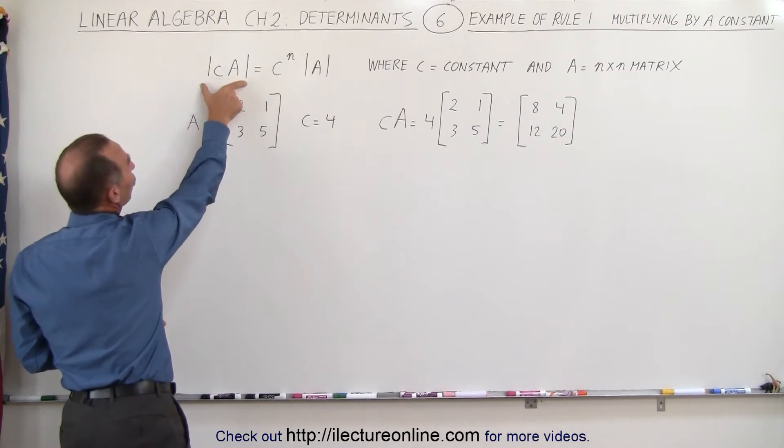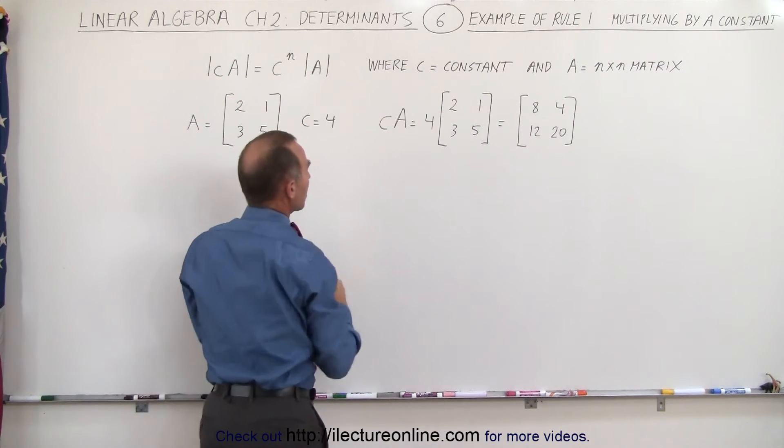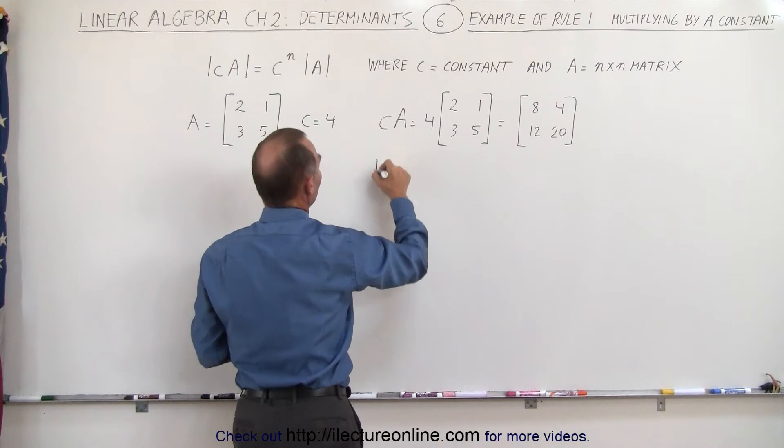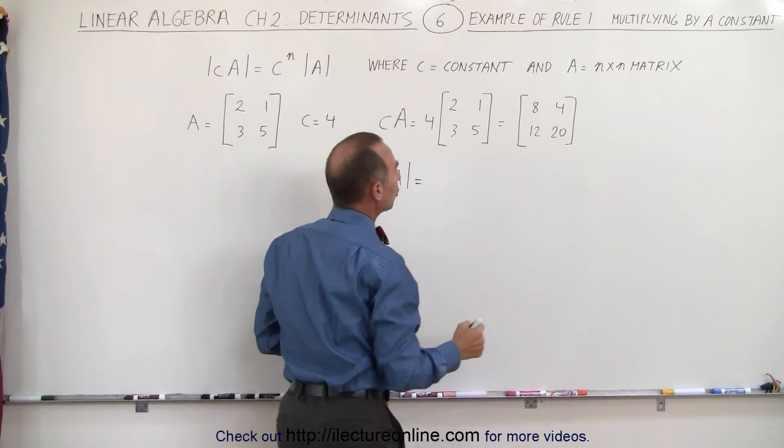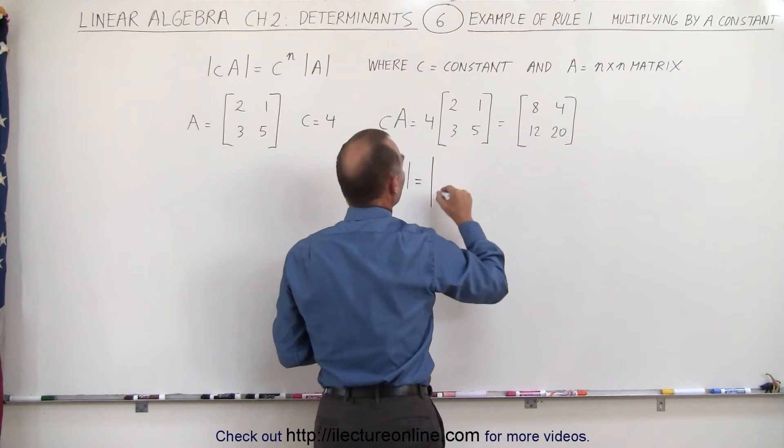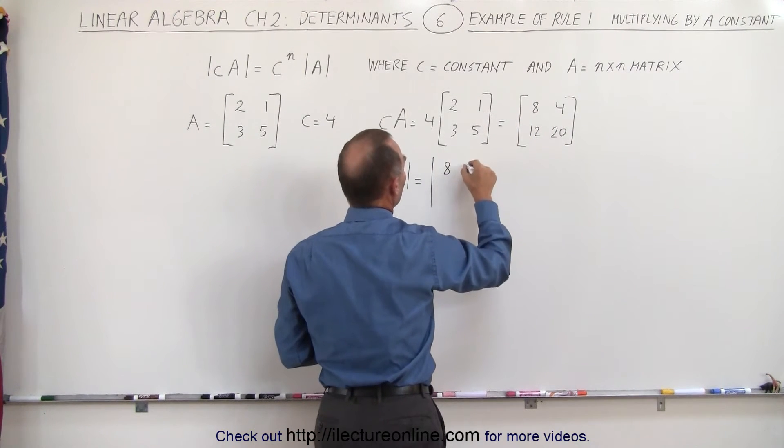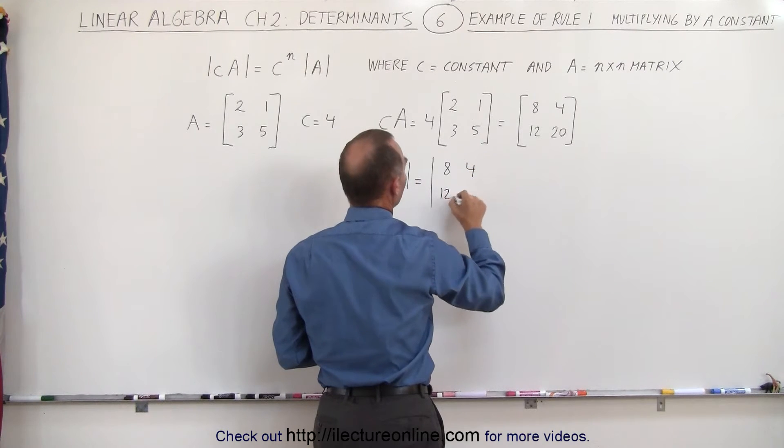Let's now take the determinant of this right here. So the determinant of C times A is written like this. And so that would be equal to, or actually let me just write it out. It makes more sense when I write it out like that. That would be 8, 4, 12, and 20.